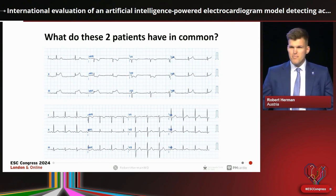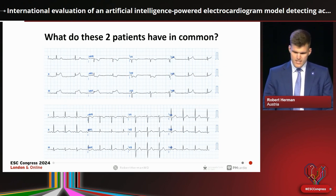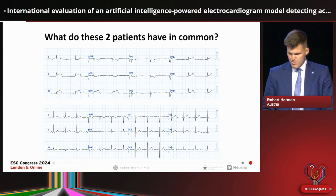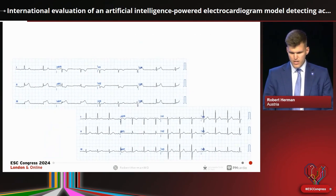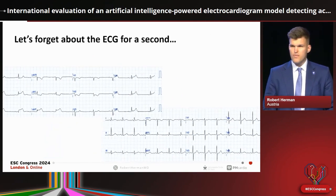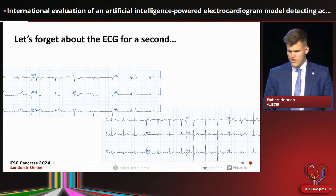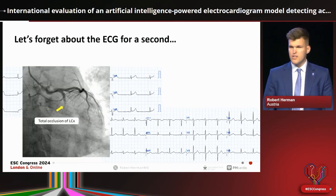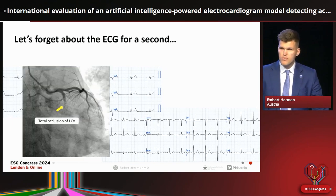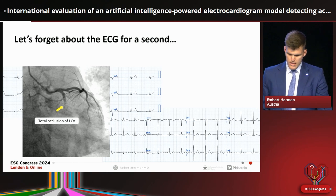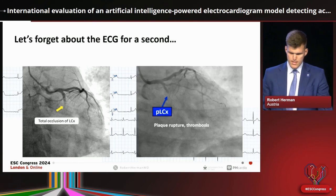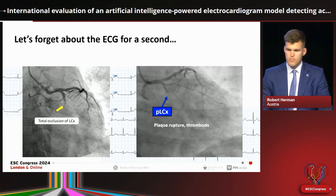The obvious answer is that these are both 12-lead ECGs on a blue grid, but if we forget about the ECG for a second and look at the coronary angiographic outcomes — the patient on the left has an acute occlusion of the left circumflex, and the patient on the right also has an acute occlusion of the left circumflex.